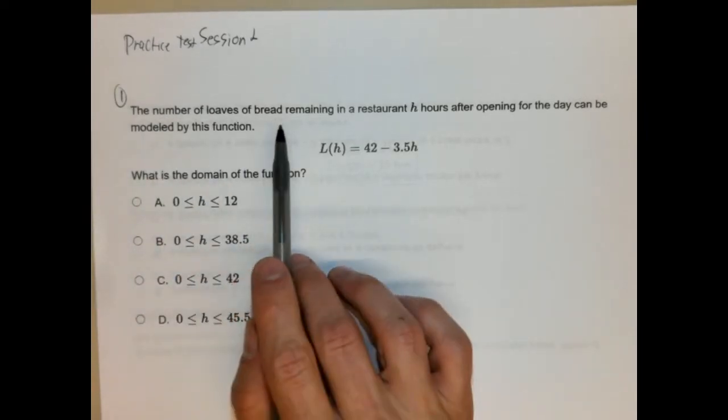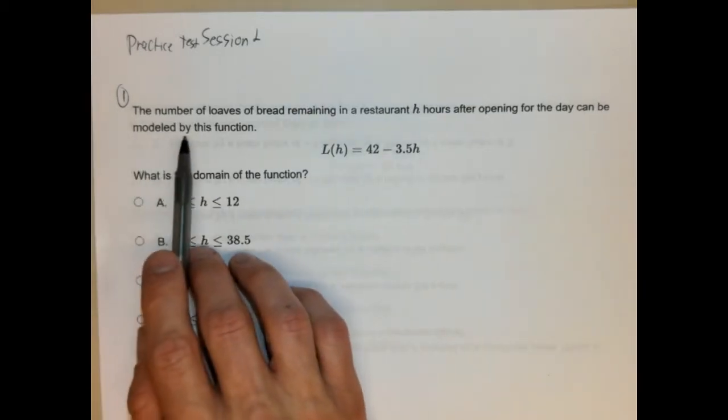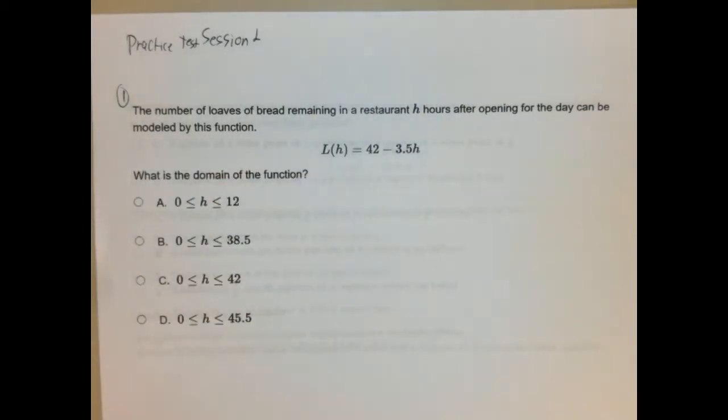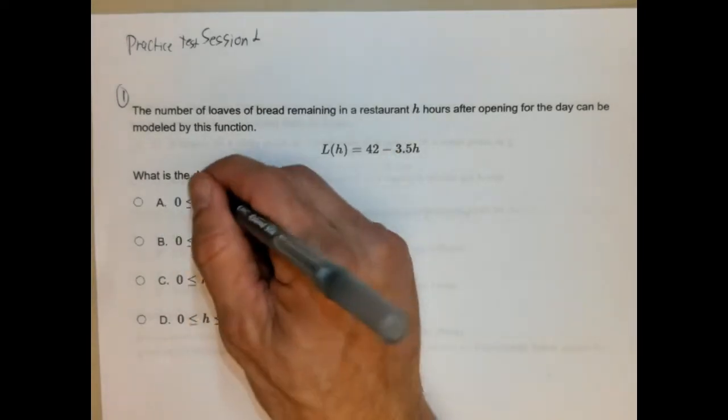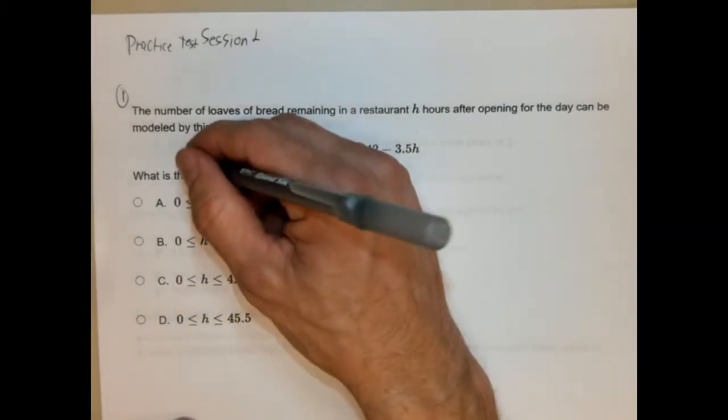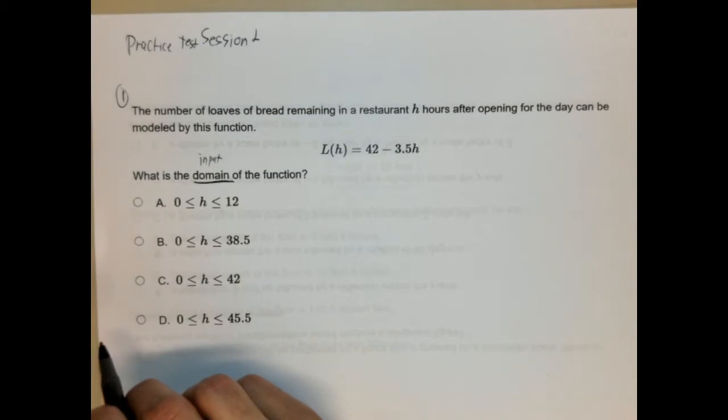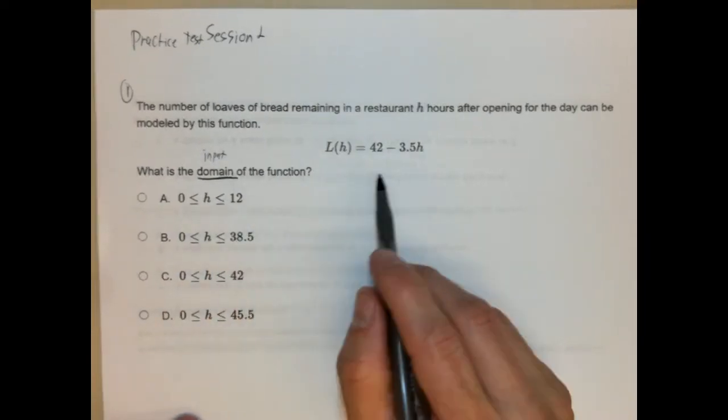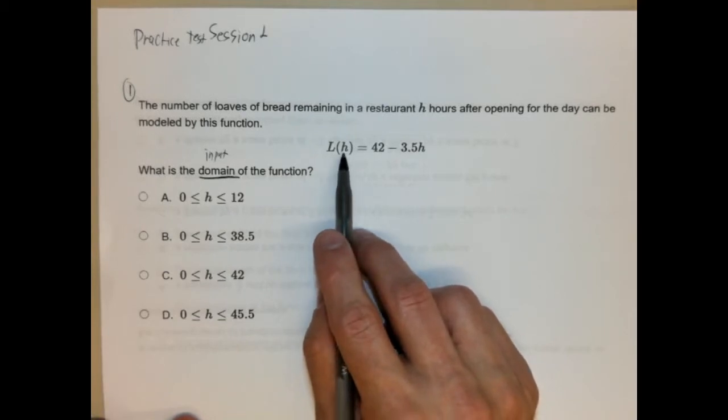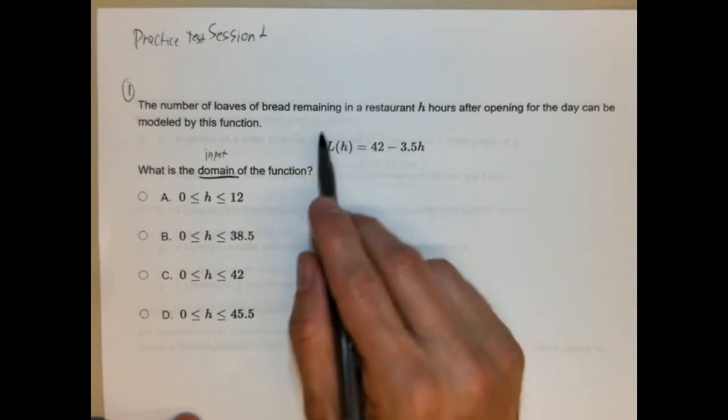It says the number of loaves of bread remaining in a restaurant h hours after opening for the day can be modeled by this function. So we're starting with a certain amount of bread and as time goes by we can see what's happening here. We're losing bread, right? Bread's being used. What is the domain of the function? So remember domain is the input just off the bat.